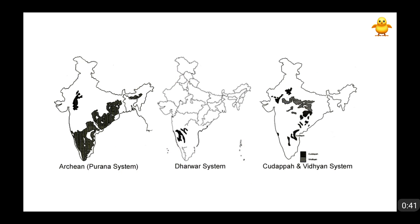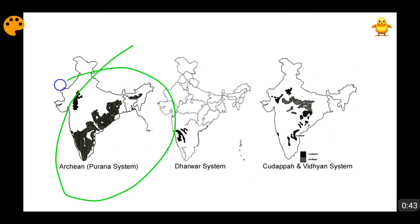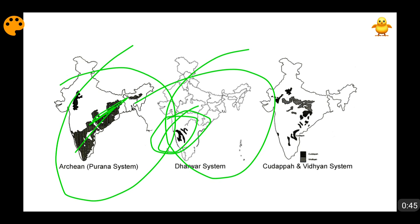These are basically the orientation of Archean rocks and the Dharwar rocks. The complete orientation of Dharwar rocks has already been covered in my Archean Gneiss and Schist video and in the Dharwar video — the pre-Cambrian rocks video. Kindly go and watch it; the link is given in the description box below.